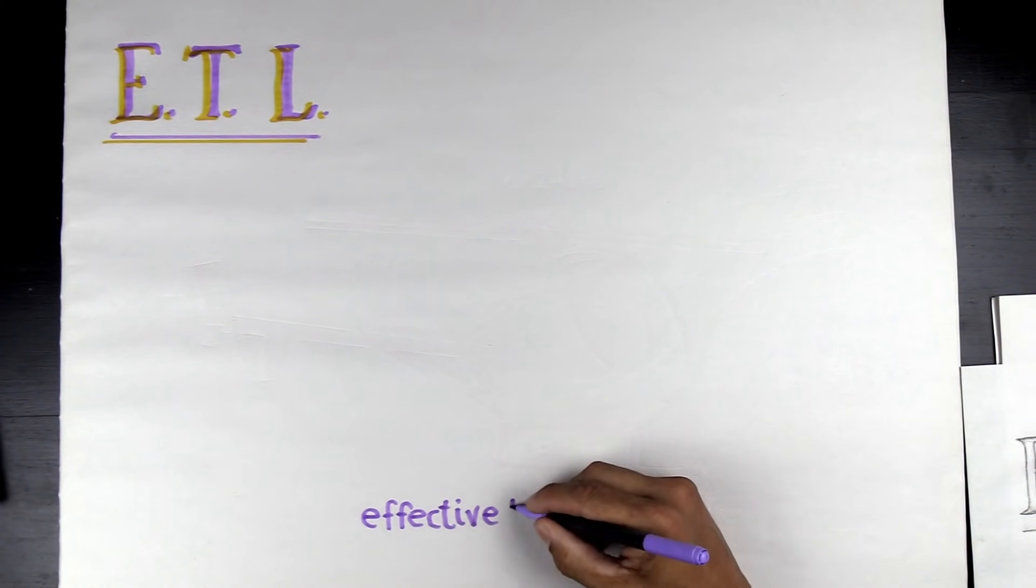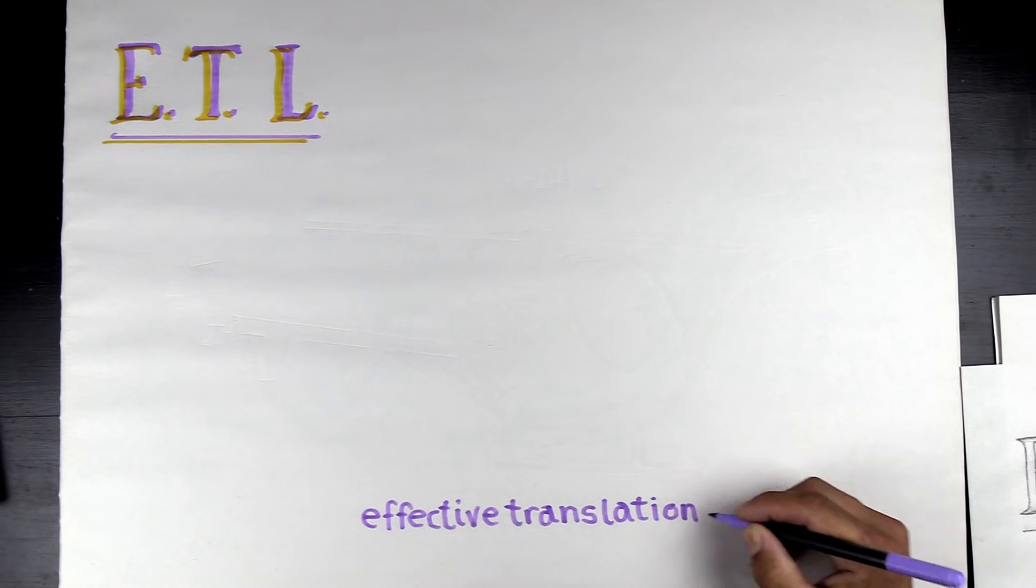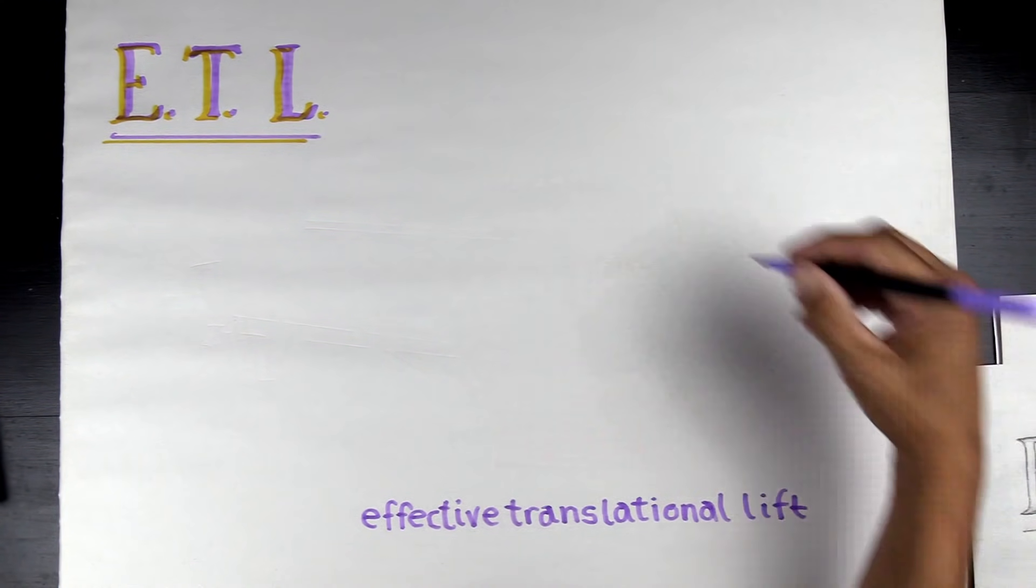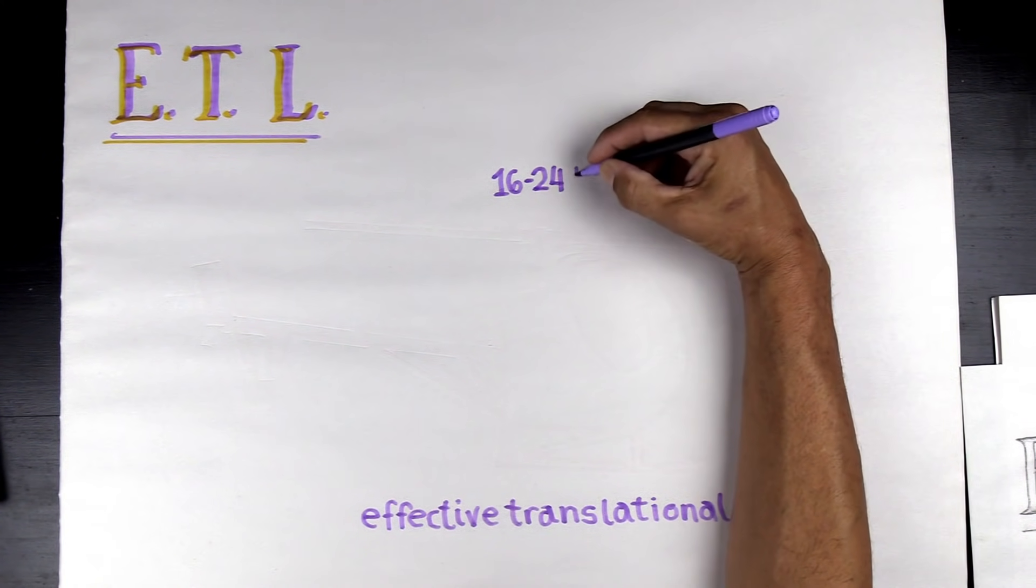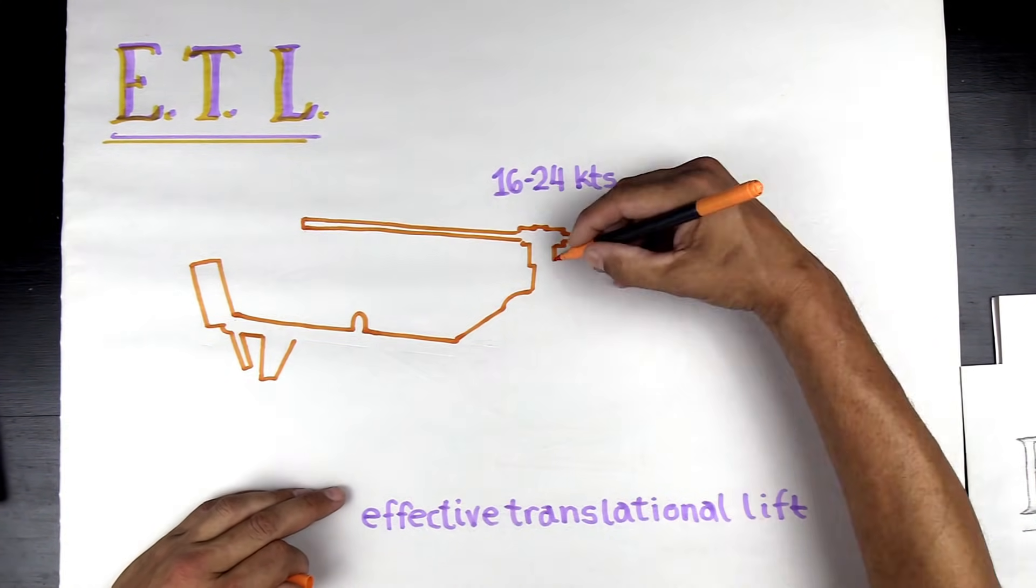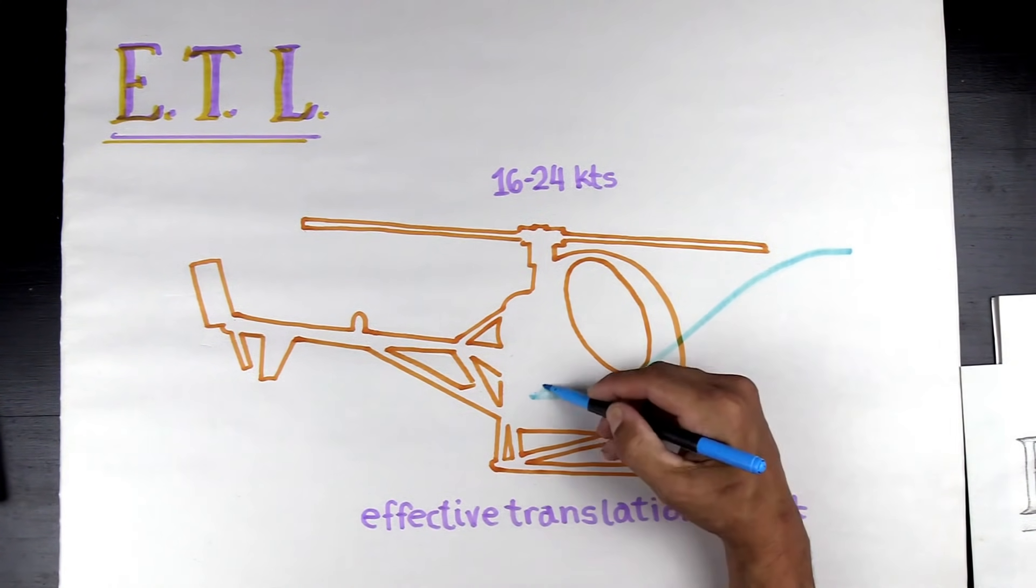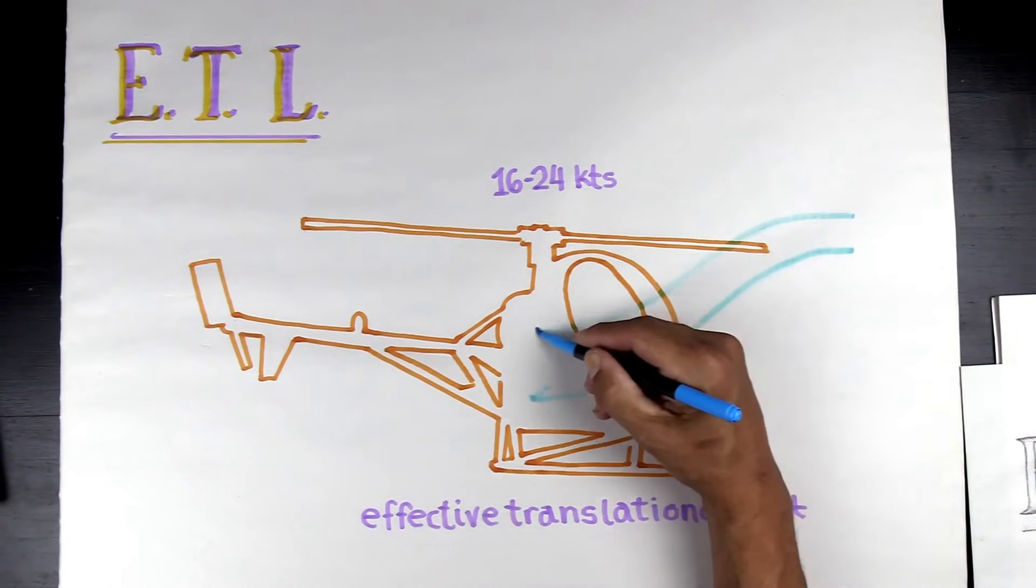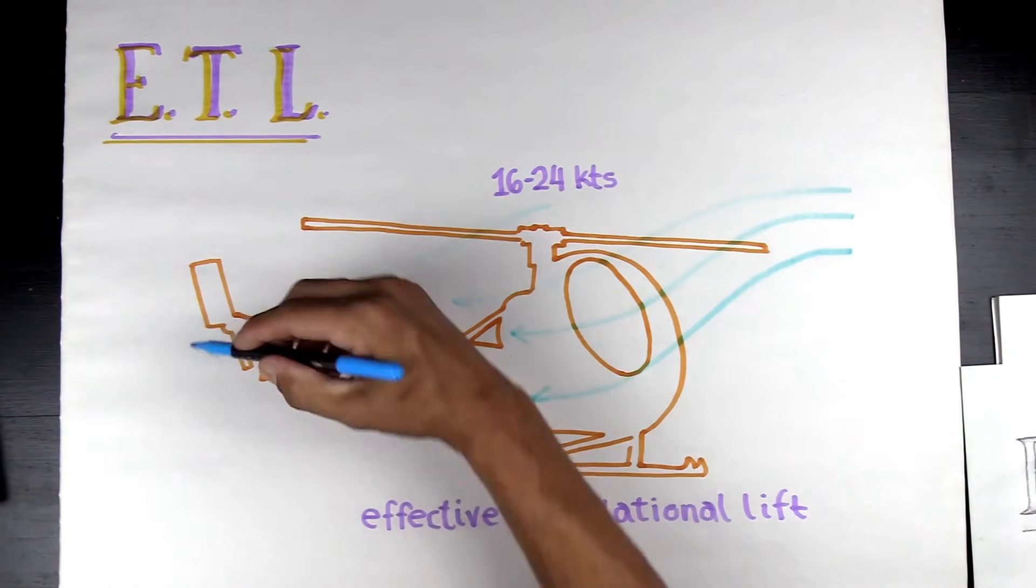Next we get to ETL, which is just effective translational lift. This is effective translational lift. This happens between 16 and 24 knots. Now we have clean air going through the rotor system. Our vortices - we always have little vortices - but they're all but blown away.